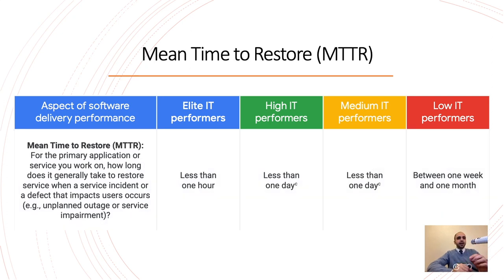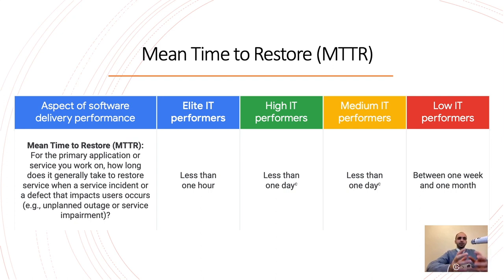Mean time to restore is a measure I really love, because it gives everyone the confidence to push code to production. If you know that even a bad push will self-heal quickly, you won't be afraid to release. There are two things that make this possible: first, having a way to detect when code is bad — alerts firing when something goes wrong in production; and second, having a way to quickly restore things back to normal.